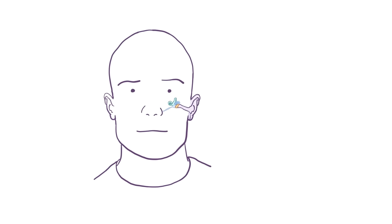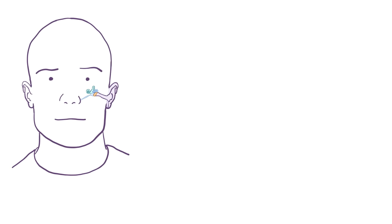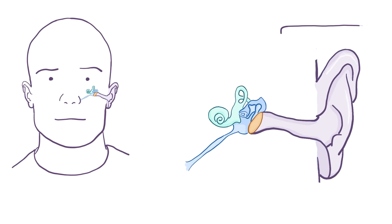The ear can be broken down into three sections. The first is the outer ear, which is the part you see, called the pinna, as well as the ear canal.